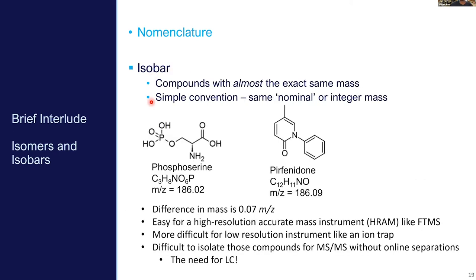Isobars are compounds with almost exactly the same mass — the same integer or nominal mass, say 186 m/z. Here we have two completely different compounds with different structures, different molecular formulas, different chemistries, but their mass is only 0.07 m/z apart. On a high-resolution instrument we would resolve these no problem, but on a low-resolution instrument like a linear ion trap we might not. And if we want to do MS/MS experiments, we need to use LC up front to separate them.